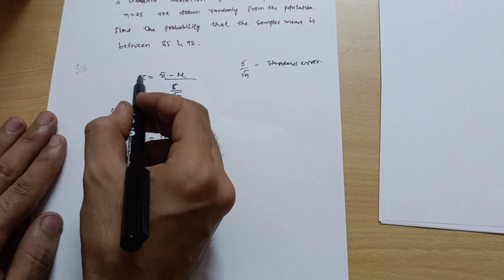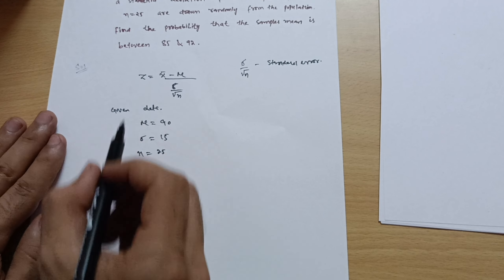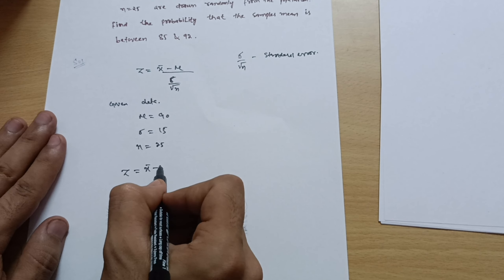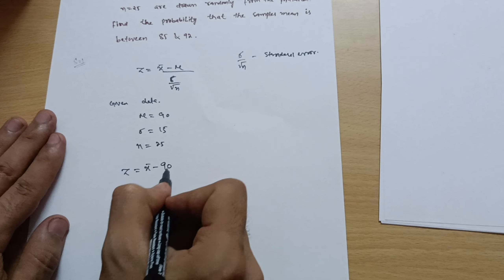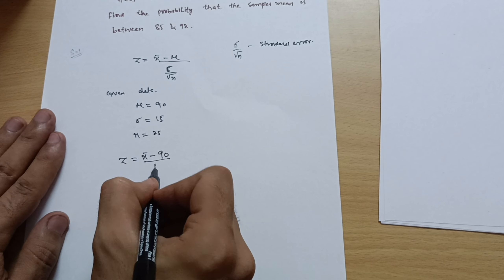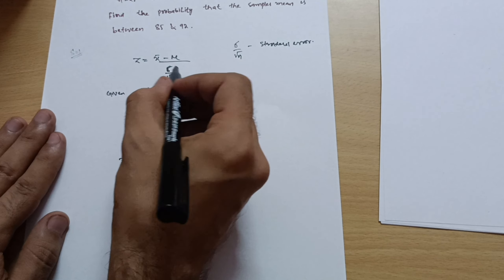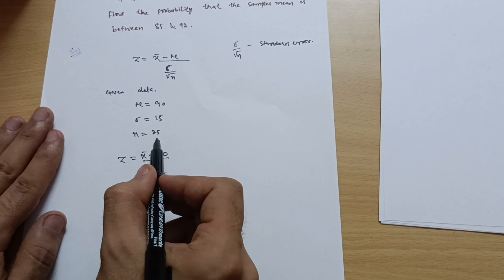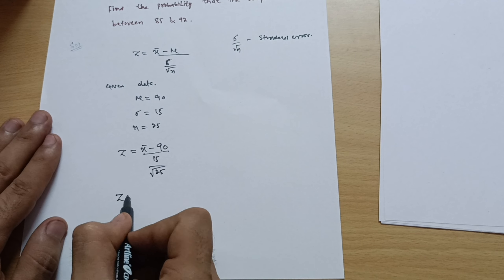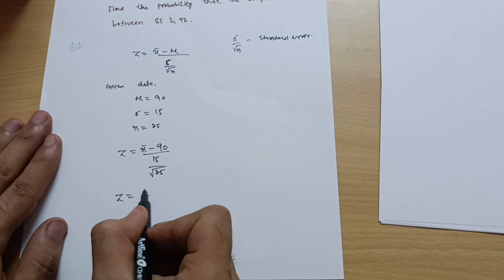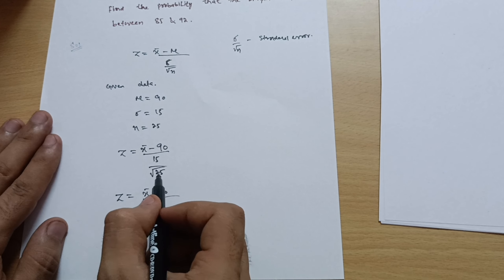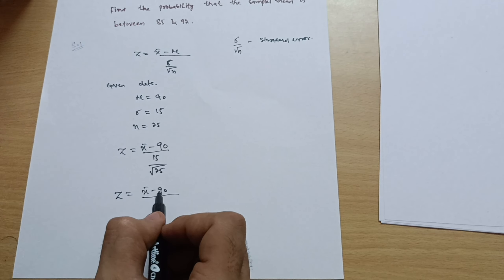All values are available, so put them into the equation: z = (x̄ − μ) / (σ/√n), which gives z = (x̄ − 90) / (15/√25).